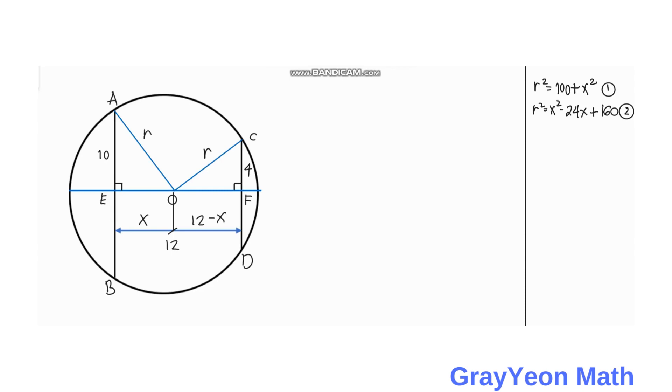Next thing we have to do is we need to subtract equation 1 from equation 2. So equation 2 we have R squared is equal to X squared minus 24X plus 160, and equation 1 we have R squared is equal to X squared plus 100.